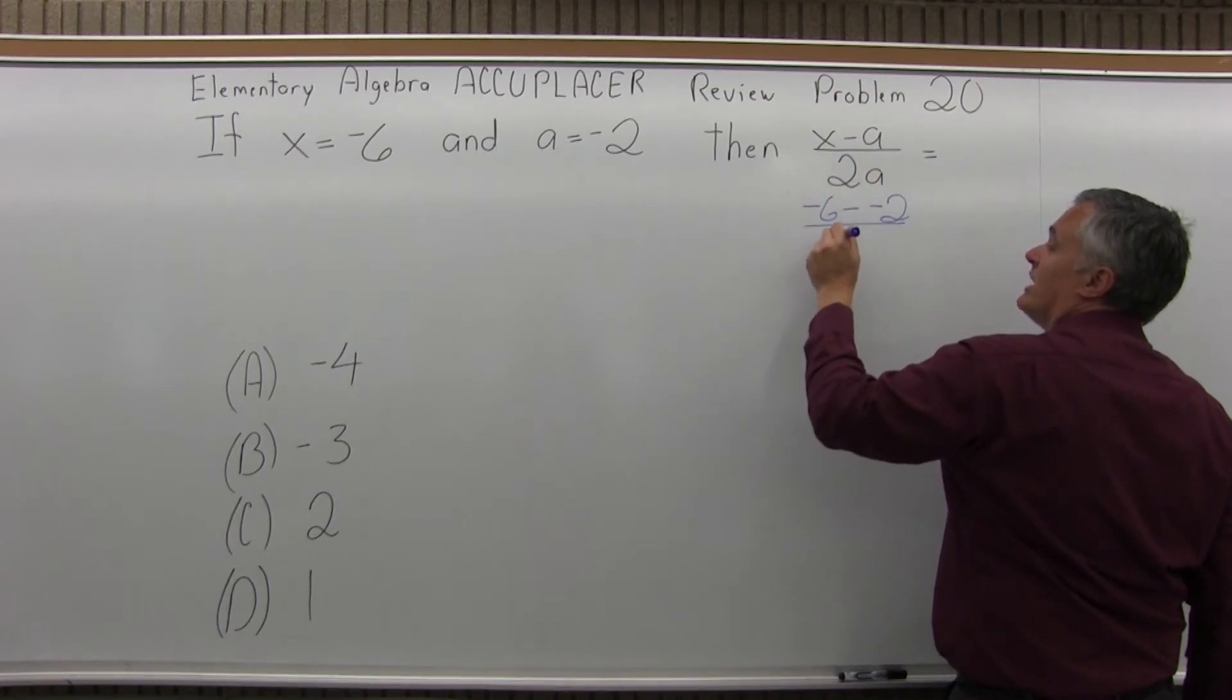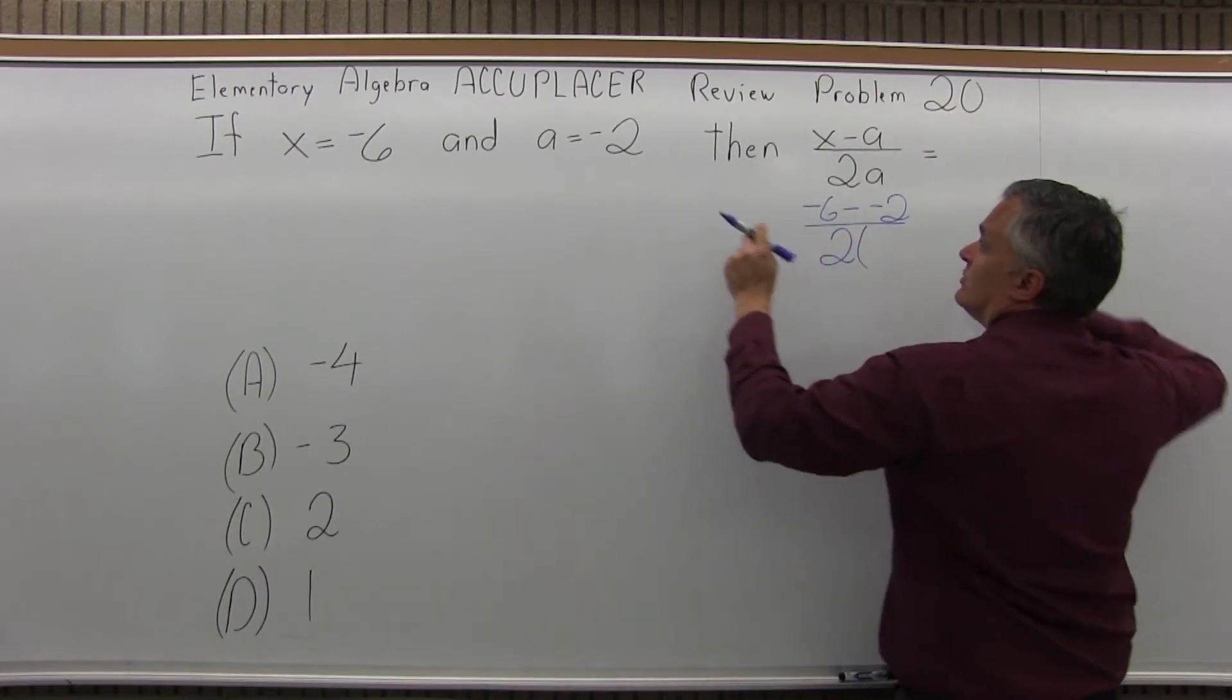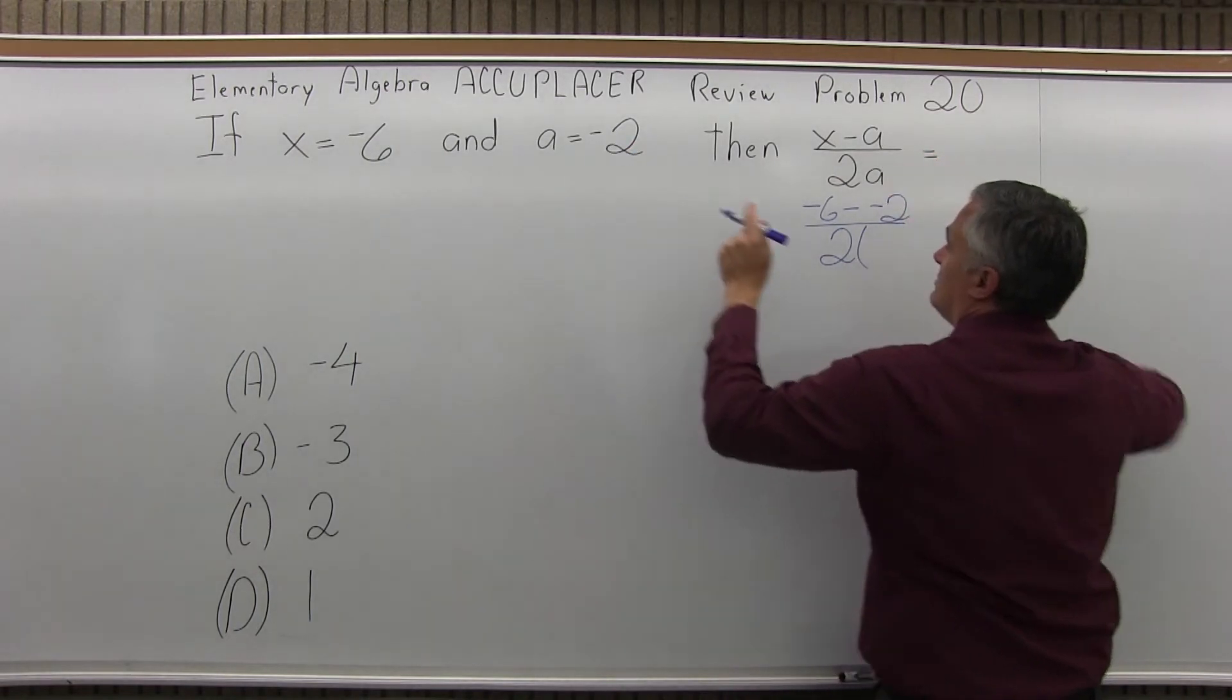In the denominator, 2a is really 2 times a. So 2 times a becomes 2 times negative 2.